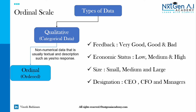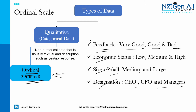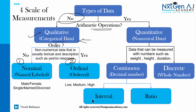The second type is ordinal data, which deals with order. For example, customer feedback like very good, good, and bad; economic status like low, medium, high class; sizes like small, medium, large; and different designations. We can order this data. One important point to remember about ordinal is that it contains the properties of nominal and then ordinal — keep that in mind.